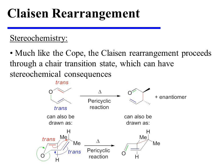Much like the Cope, the Claisen Rearrangement proceeds through a chair-like transition state, which can have stereochemical consequences. In this example, the allyl vinyl ether has two trans-olefins. We can draw that same reactant in a chair-like arrangement, and if we are careful to preserve the trans-configurations of the two double bonds, we notice that the methyl groups can be placed in pseudo-equatorial positions. After the Claisen Rearrangement takes place, we notice that the methyl groups still occupy pseudo-equatorial positions.